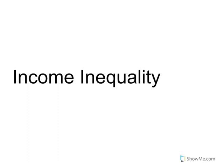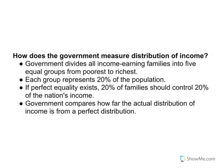Income inequality simply means that the distribution of income throughout a society isn't equal. The best way to look at it is through how the government goes about measuring distribution of income. The government divides all income-earning families into five equal groups, sometimes called quintiles — from the prefix quin, meaning five — from poorest to richest.